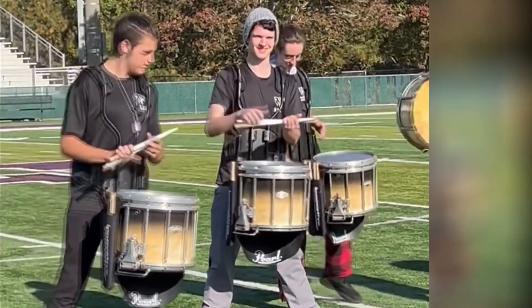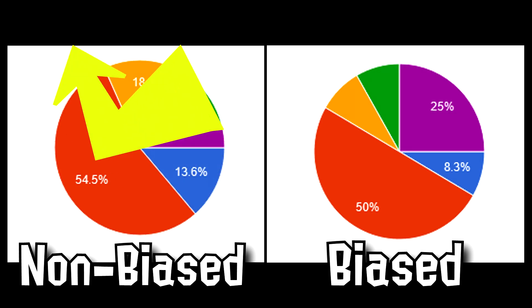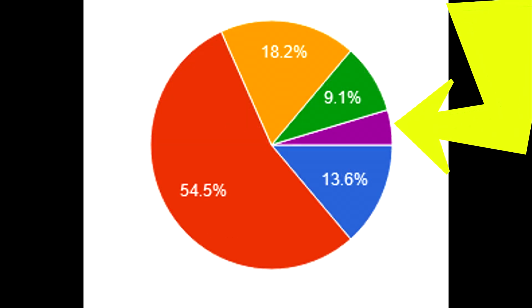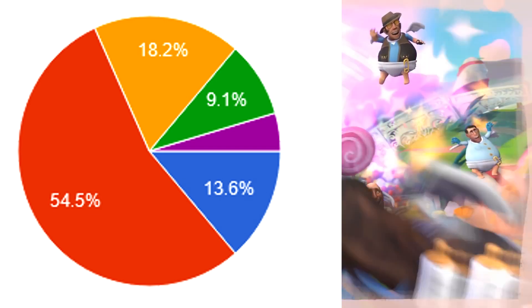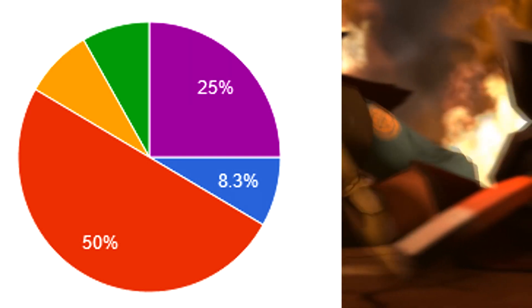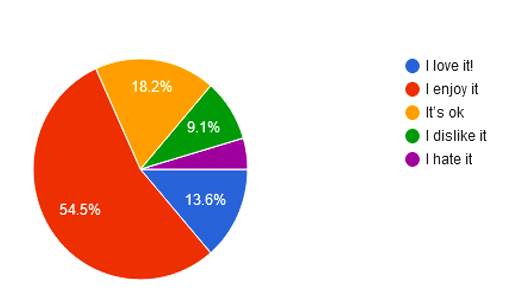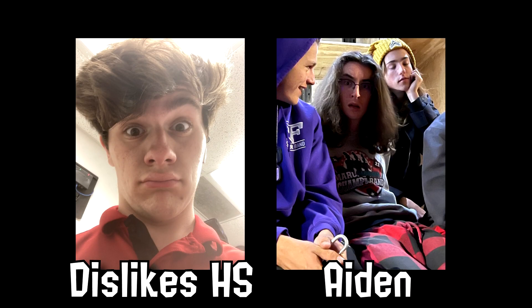It kinda worked. Taking a look at the two side by side, the main answer for both, taking over 50% of the votes, was that the students enjoy high school. While the non-biased question had 4.5% more of those votes, the real changes were in the amount of people who said they hated high school. Only 4.6% of students who answered the non-biased question hated our school, but 25% of students who answered the biased question said they hated it. The non-biased question had a lot more positivity overall, but the amount of students who love, enjoy, or are just okay with our school far outweigh the ones who dislike or hate it in both surveys.